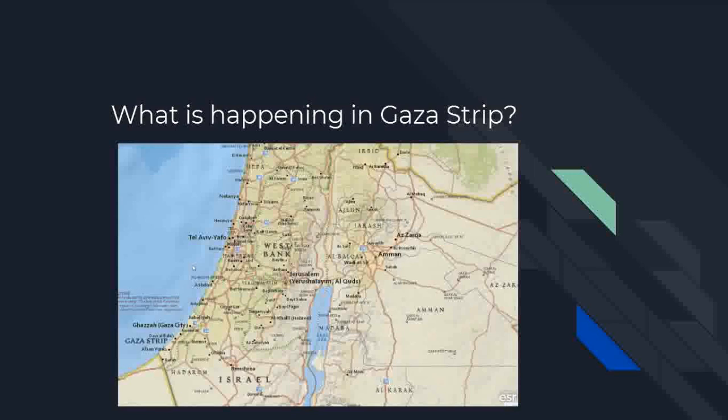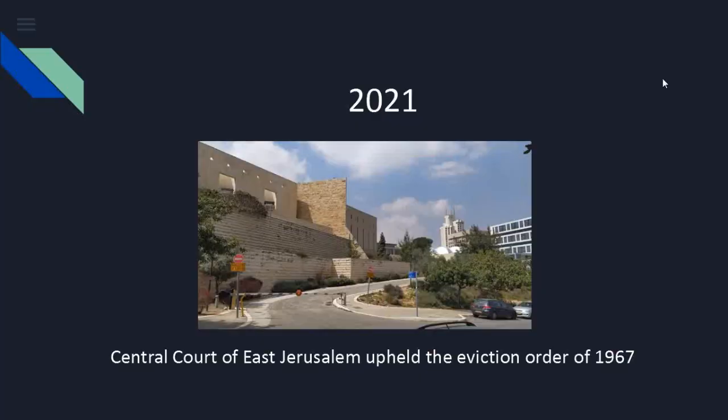Now let us discuss what is happening at present. In 1967 Israel occupied Jerusalem, and in the same year Israel ordered the Palestinians living in the territory to leave Jerusalem. This was opposed by the Palestinians and the case was referred to the Israel court of law. In 2021, the central court of East Jerusalem upheld the eviction order of 1967. On 7th May 2021, Israel allowed the Palestinians to offer prayer in Al-Aqsa Mosque in East Jerusalem, but the Palestinians protested against the court's verdict regarding the eviction order.